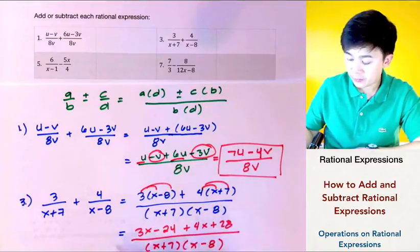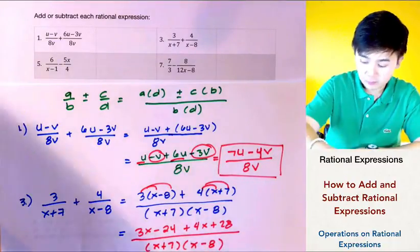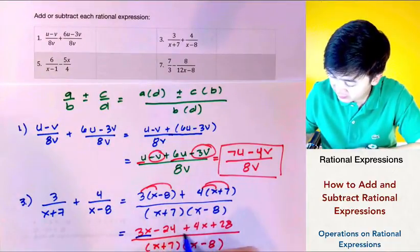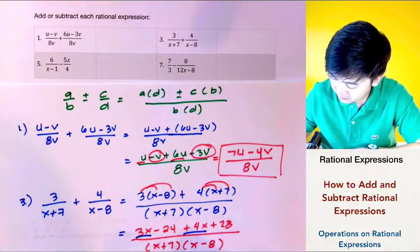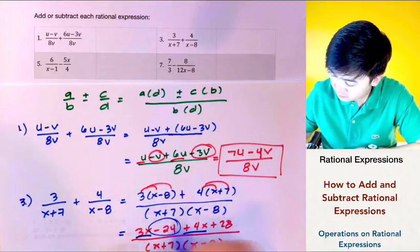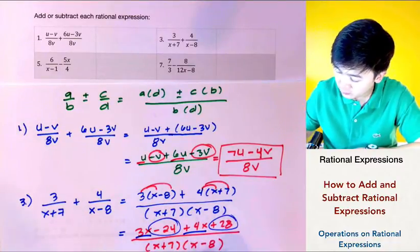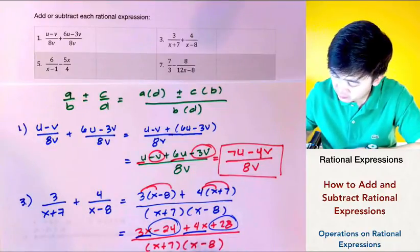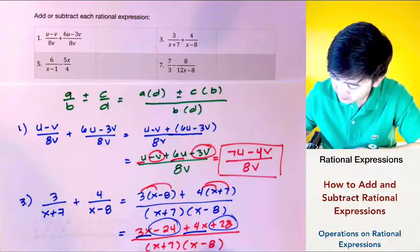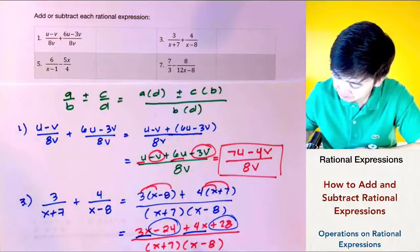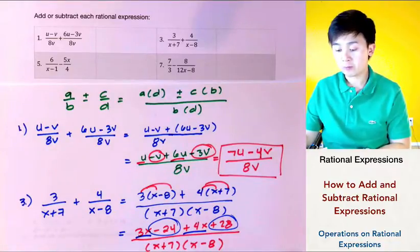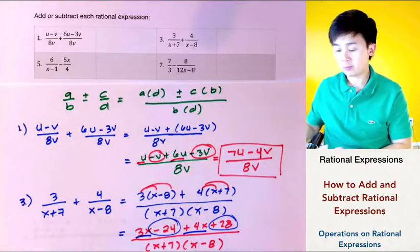The numerator can still be simplified by combining like terms. We combine 3X and 4X, which equals 7X, and negative 24 and positive 28, which gives us positive 4. So our answer is 7X plus 4 all over X plus 7 times X minus 8, and this is our sum for problem number two.